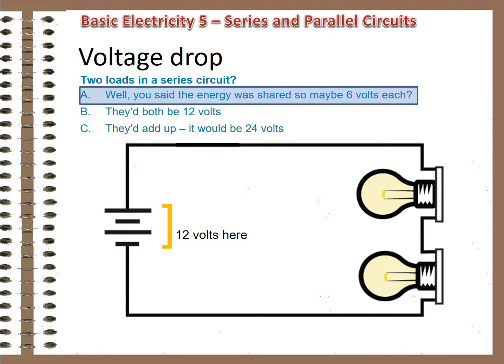If you picked A, you're almost right, closer than the other choices anyway. The two devices do split the voltage, and if they were identical, the same amount of resistance, they'd split it in half, 6 volts each. If their resistance varied, they'd divide it in direct proportion to their resistance.